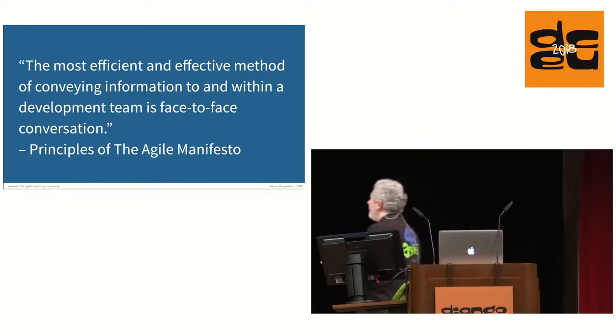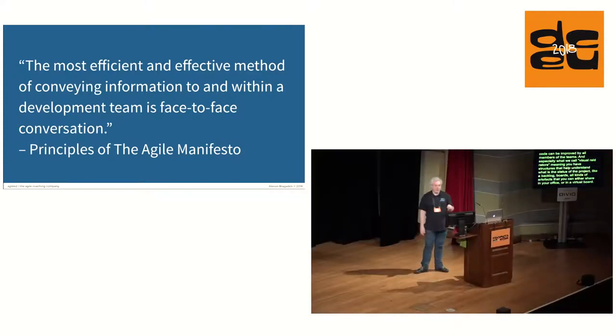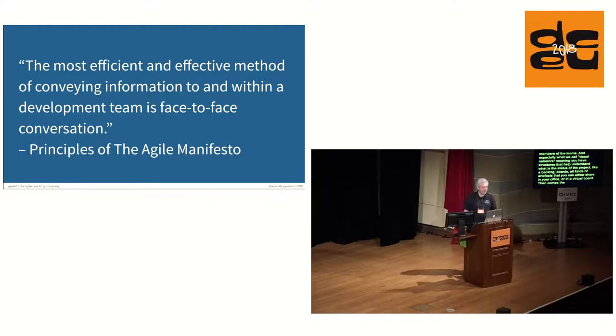But then comes the kicker. We know instead from experience and from work with companies that actually the most effective teams are the ones that are co-located, meaning that they work in the same office. For example, in large American companies, they discover that not only they have to be on the same building, but they have to be tied together. Even if people have nice offices far from each other, it's better to put them together so they can contribute more. That seems to break the whole reason of remote working.